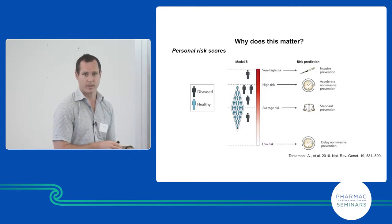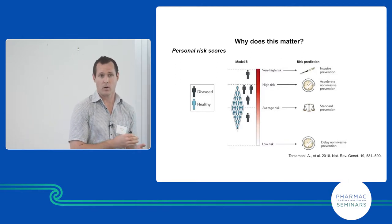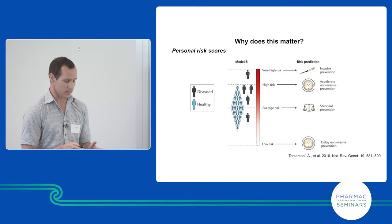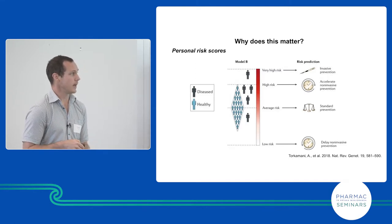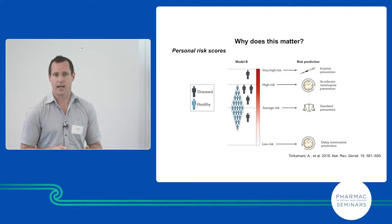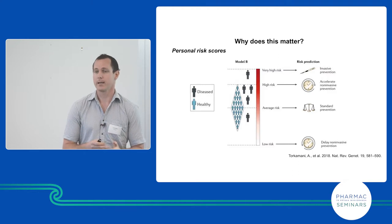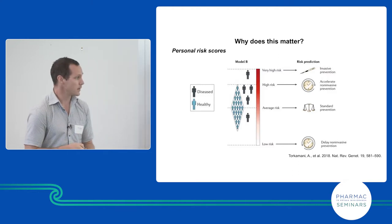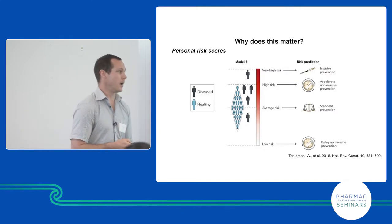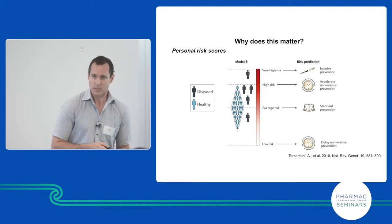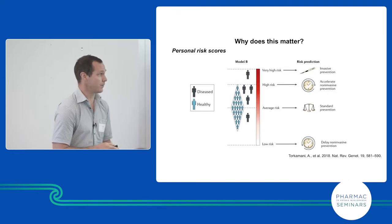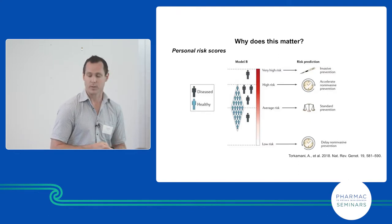Again, this is going to be different for every population. There's going to be some crossover, but there are going to be unique variants only found in certain populations that need to be discovered. These can be used to estimate risk, and perhaps someone with a very high risk could be pointed towards more invasive or earlier procedures to prevent disease, while those at very low risk receive more cost-effective, less intensive interventions — stratifying health resources to those most in need.